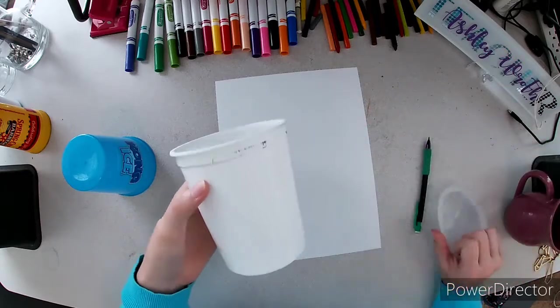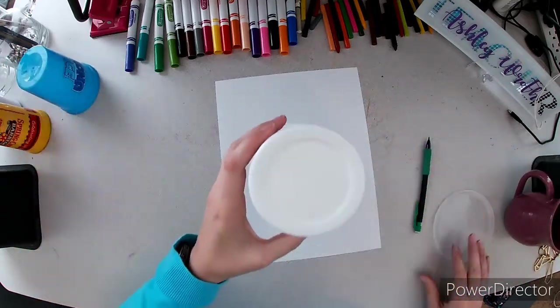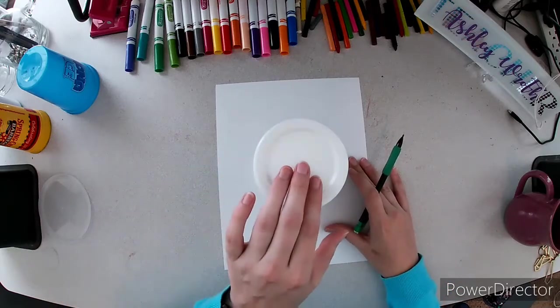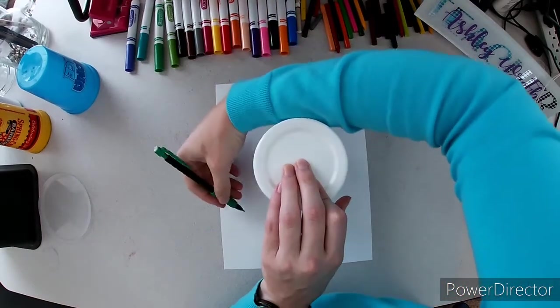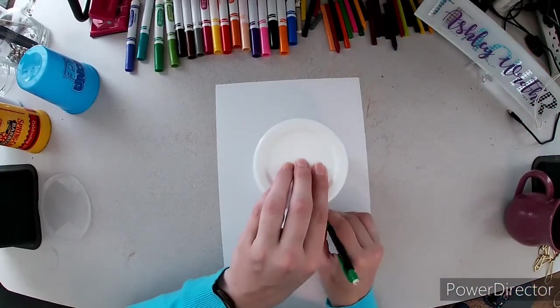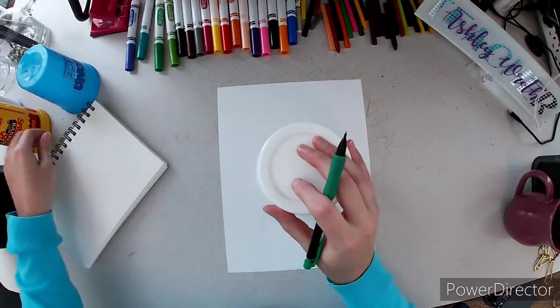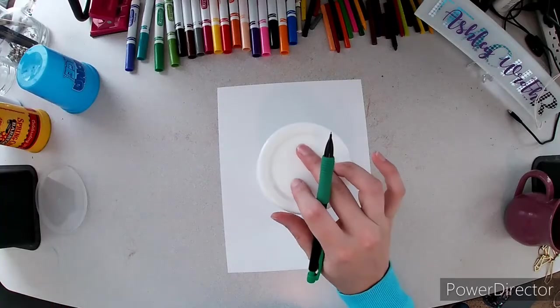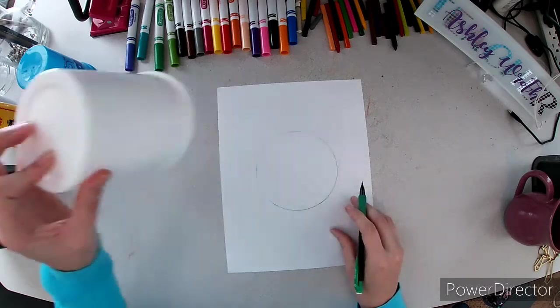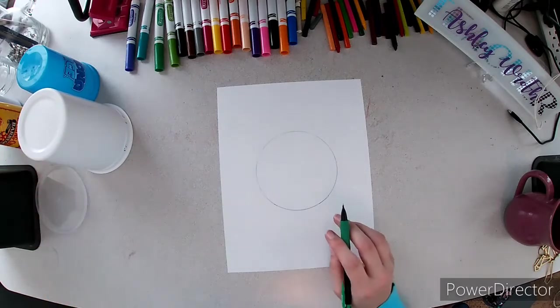This used to be a yogurt cup and I like to use it as a pencil cup sometimes. So I'm going to use this. I'm going to go all the way around. Curve around. Excuse me hand. Oh my books are falling. All right now we have our tiger's face.